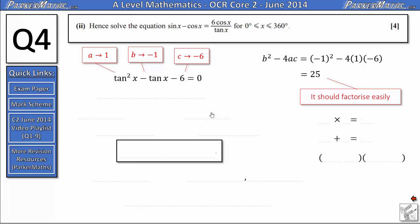So to factorize this quadratic we're looking for two numbers that multiply together to give -6 and two numbers that add together to give -1. Now the two numbers we're looking for are -3 and 2. So we can factorize our original quadratic into (tan x - 3) and (tan x + 2). So our next line of working out will be (tan x - 3)(tan x + 2) = 0. Now that it's factorized it's fairly straightforward to solve.